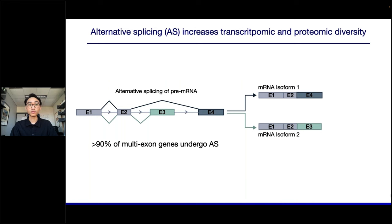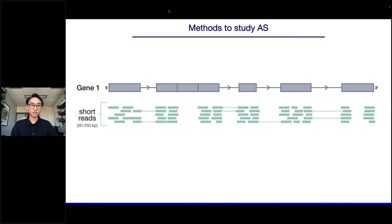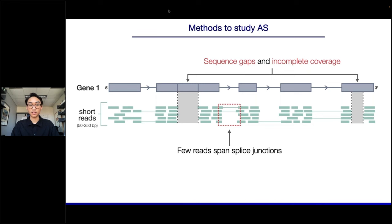Alternative splicing is an important post-transcriptional regulatory mechanism that increases transcriptomic and proteomic diversity in humans. A pre-mRNA can form two splice variants or isoforms, which can translate into two different proteins with various functions. Traditionally, methods used to study alternative splicing relied on short reads of 50 to 200 base pairs — but these cause issues: few reads span splice junctions and they create sequence gaps, causing incomplete coverage. With long-read sequencing, reads exceeding 500 base pairs now provide full end-to-end, full-length coverage.